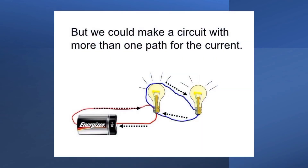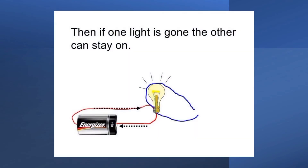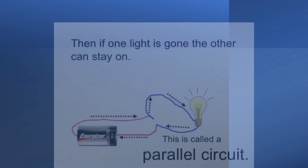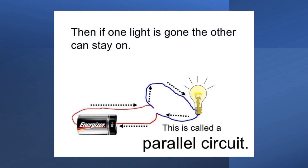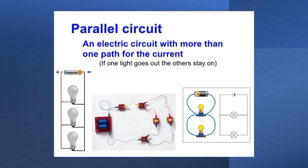Class, take note that we can make a circuit with more than one path for the current. In this case, when one light goes off the other can stay on. We call it a parallel circuit. Simply, a parallel circuit is an electric circuit with more than one path for the current to flow. Thank you for watching.